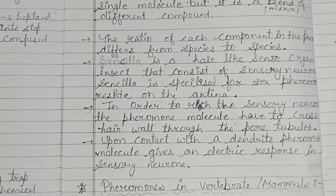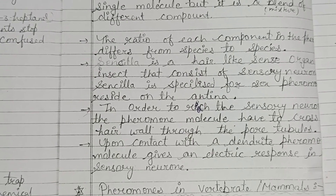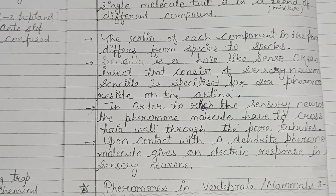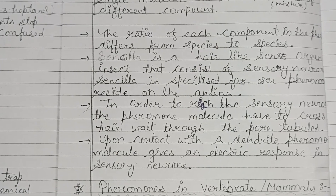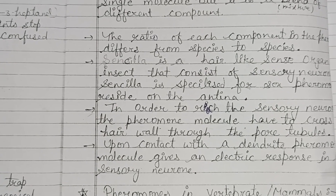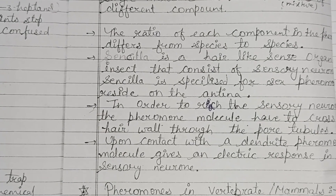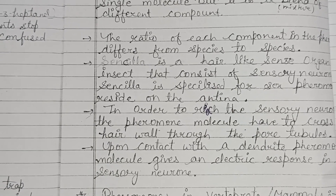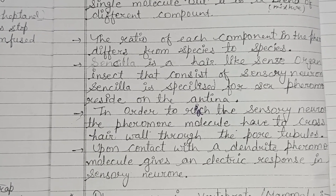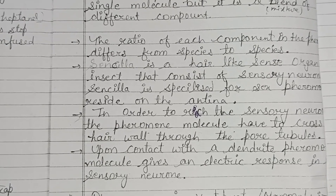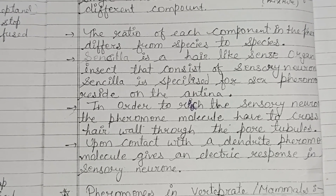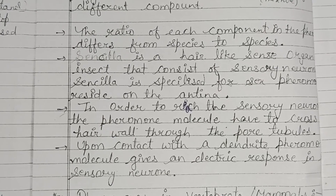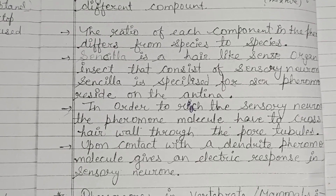Regarding primer pheromones in invertebrates, ethyl oleate is released by older forager bees to slow the maturing of nurse bees. This pheromone acts as a distributed regulator to keep the ratio of nurse bees to forager bees in balance, which is most beneficial to the hive. Primer pheromones are slow-acting pheromones.